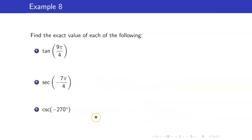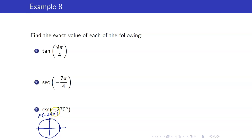For cosecant of -270°: going clockwise, -90° lands at (0, -1), -180° at (-1, 0), and -270° lands at (0, 1). So P(-270°) = (0, 1). Sine of -270° = y = 1, and therefore cosecant of -270° = 1.